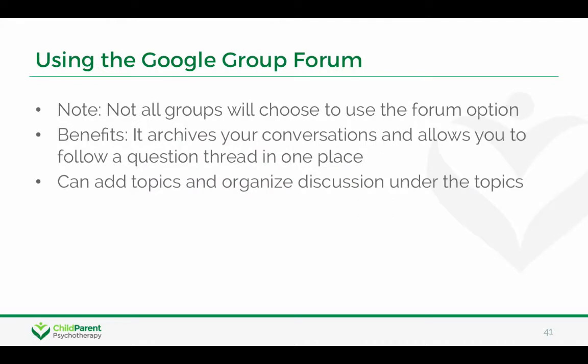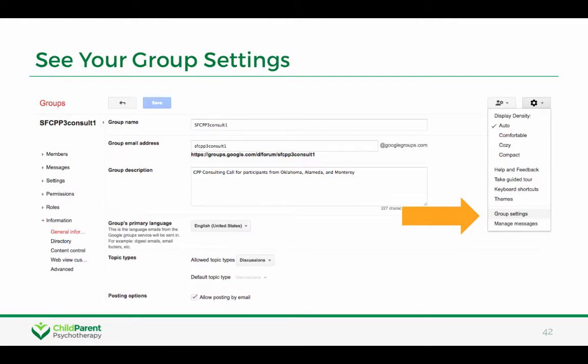Not all groups are going to use the forum option, but it does have some nice features in terms of archiving conversations and organizing discussions — you can add topics and organize your postings by topic. If you want to see your group settings, once you're in your group you can click on the little wheel icon and then click on group settings, which will show you the group name and the group email address in case you forget it.